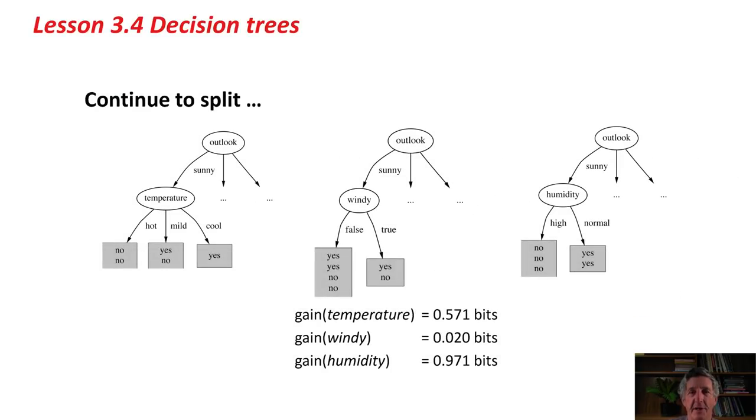Having decided to split on Outlook, we need to look at each of the three branches that emanate from Outlook, corresponding to three possible values of Outlook, and consider what to do at each of those branches. At the first branch, we might split on Temperature, or Windy, or Humidity. We're not going to split on Outlook again, because we know that Outlook is sunny. All instances that reach this place, the Outlook is sunny. For the other three things, we do exactly the same thing. We evaluate the information gain for Temperature at that point, for Windy and Humidity, and we choose the best.